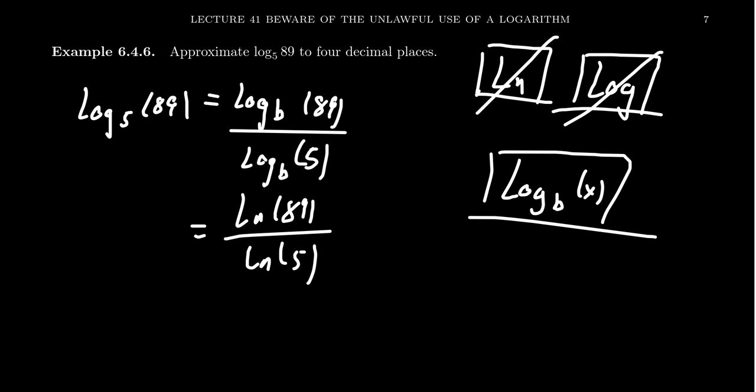The calculator, if you ask it the natural log of 89, this will be approximately 4.48864. If you ask the natural log of 5, you'll get 1.60944.